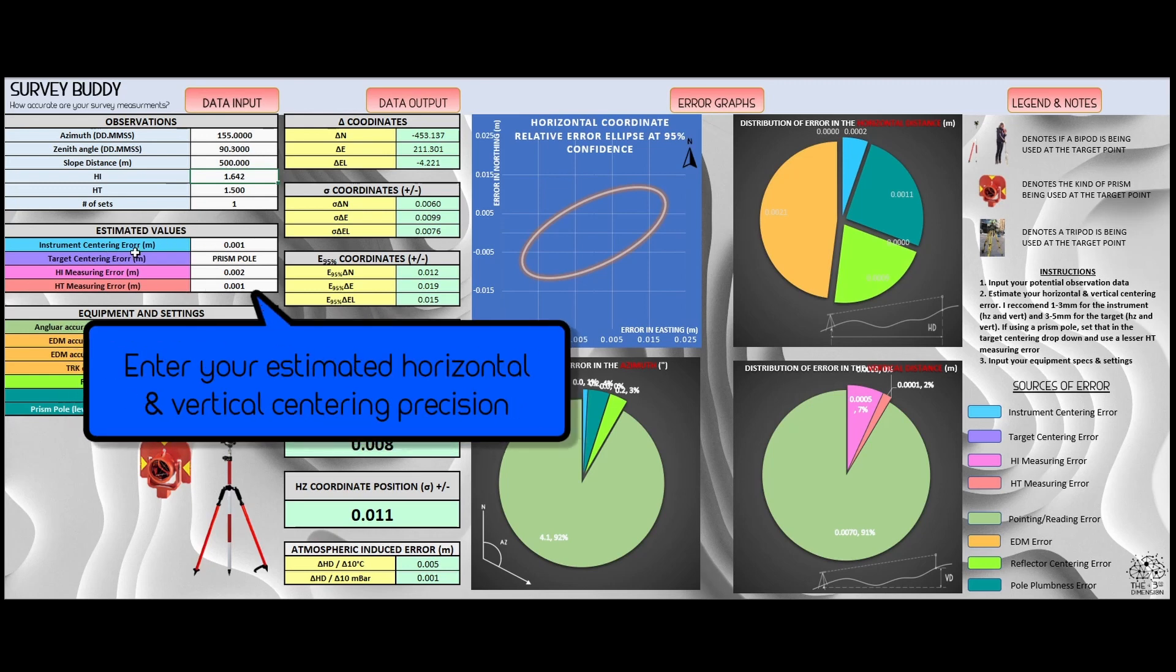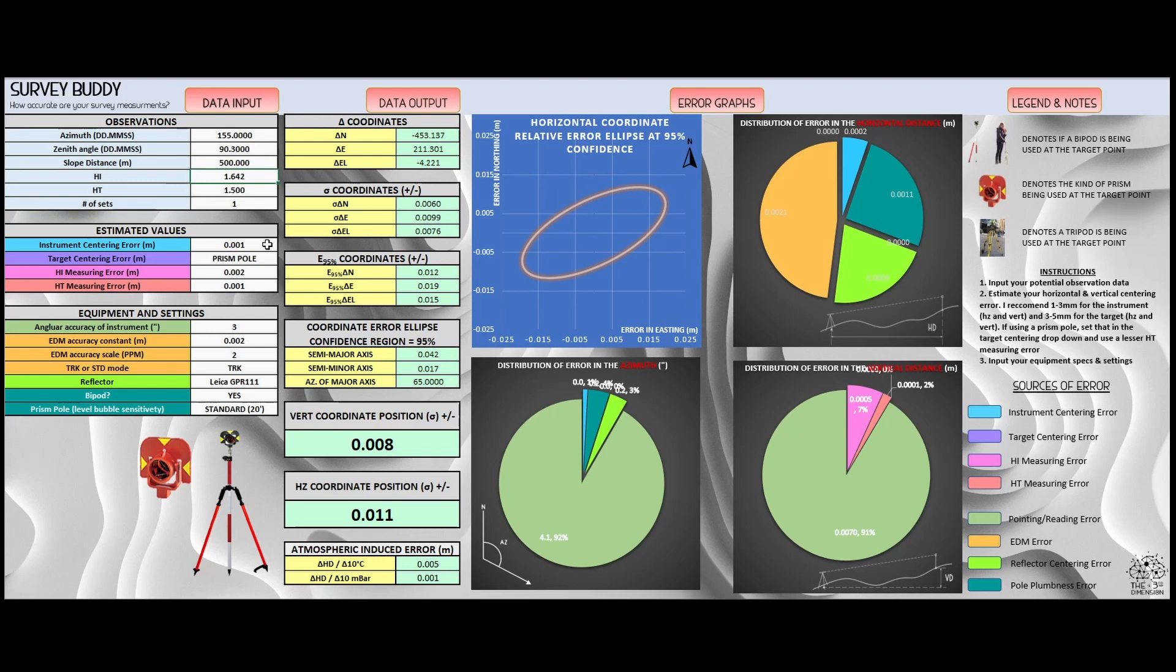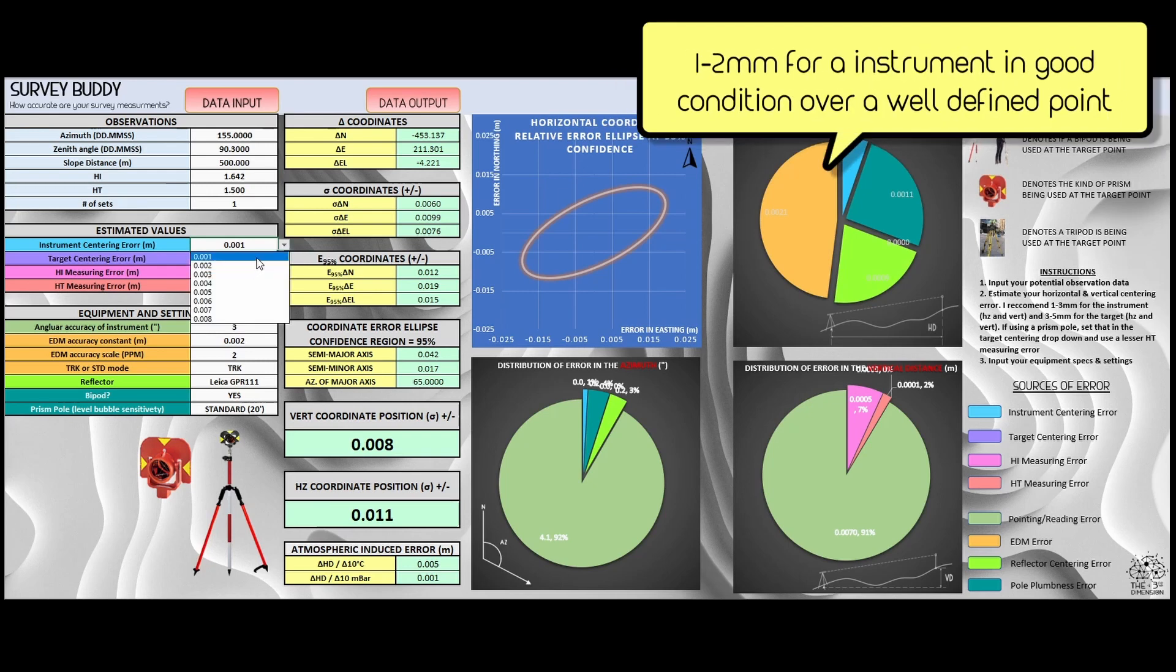The next box titled estimated values has four cells. The first being the instrument centering error. This is how well can you center your instrument horizontally over your control point? Is it a well-defined control point with a well-defined center, say a magnail for example, or is it an old rebar with no marking on top that has an oblong surface shape where you're kind of guessing the center? Also, is the optical plummet in good condition? Are you using a laser plummet? These are all factors you're going to need to take into account when choosing this value. If I'm using a well-kept up instrument, I'm going to tend to lean towards one to two mils for my horizontal centering error.